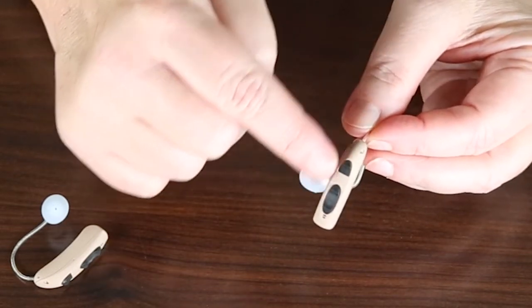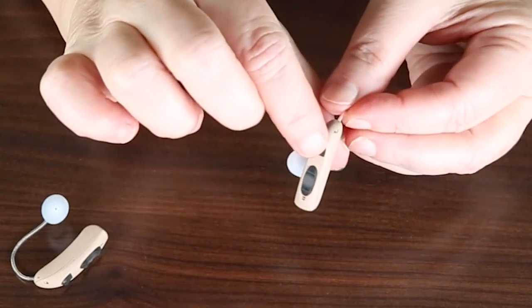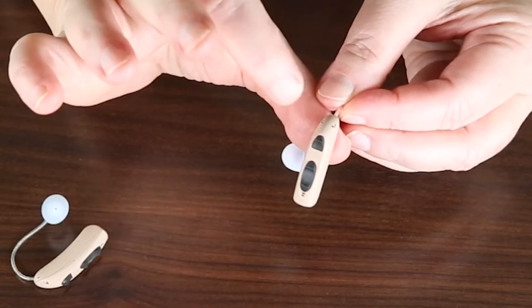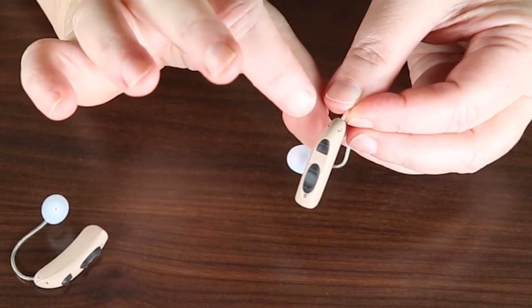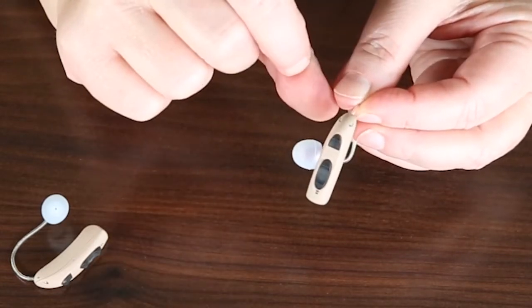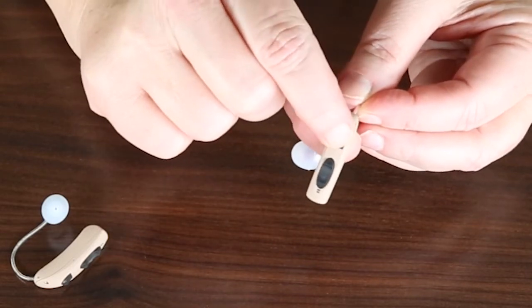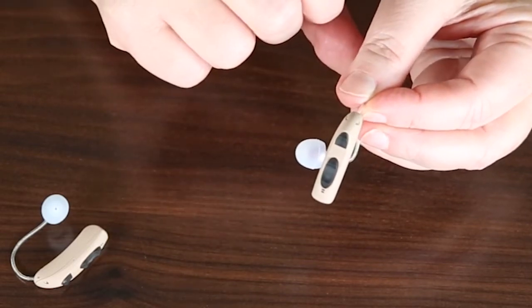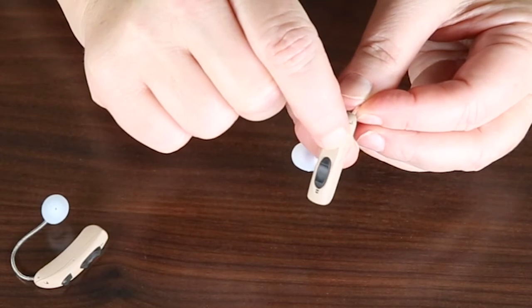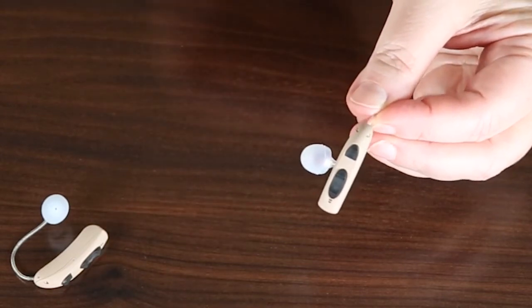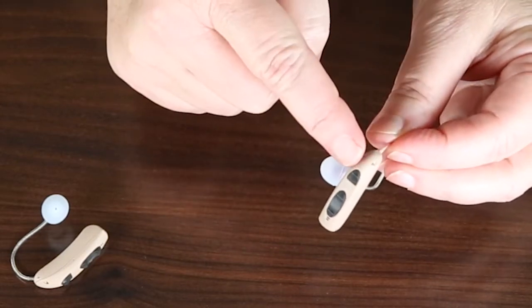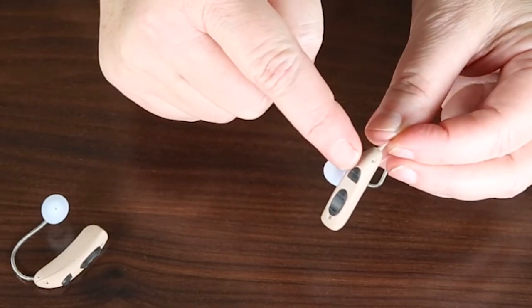Depending on the situations that you are in, you can change the program button by doing a short press. There are four program options with this one. Program one is for more mild hearing loss. Program two is when you're in noisy situations. Program three is a moderate hearing loss, so therefore it's going to be louder. And then program four would be like a more outdoor noisy area. So you can access that by doing a short press on the power button.